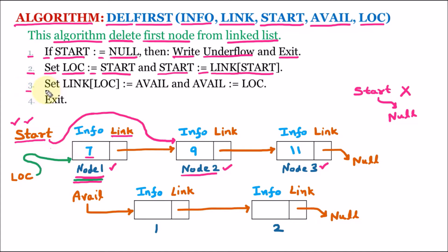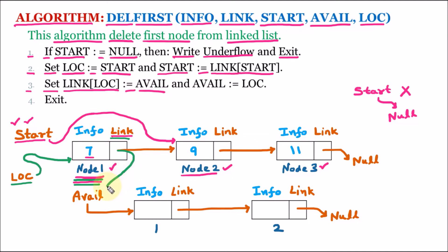We know that the location pointer is holding the address of node 1. The link part of location is now set equal to avail. So location's link part is given the value currently held by avail. We know that avail contains the address of the first free node, so location's link part now holds the address of that first free node, and the previous value of the link part is updated.